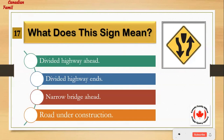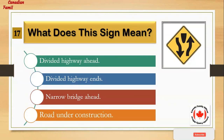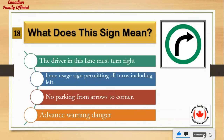What does this sign mean? Number 1: divided highway ahead. Number 2: divided highway ends. Number 3: narrow bridge ahead. Number 4: road under construction. And the answer is: divided highway ahead.